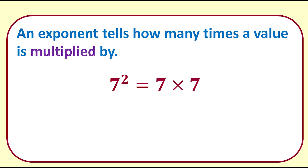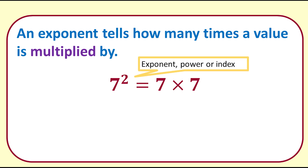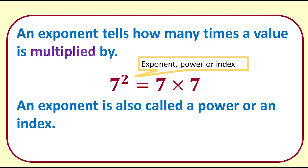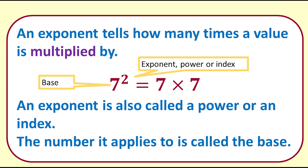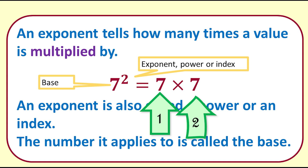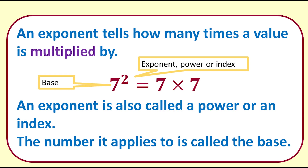Exponents! An exponent tells how many times a value is multiplied by. The exponent is the little number above and to the right of an ordinary sized number — it is sometimes called a power or an index. The normal sized number it applies to is called the base. As the exponent in this example is 2, the base is multiplied two times. When it is written out in full it is called expanded form.